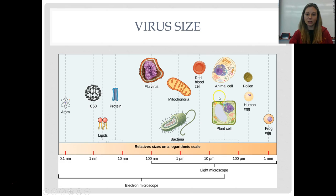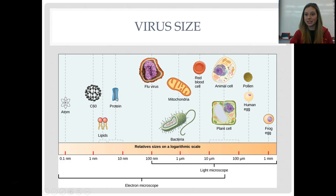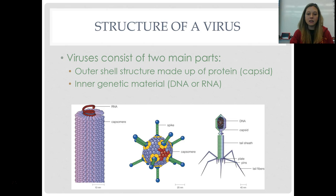Put all those organelles together and you get the size of animal and plant cells — much bigger, but still invisible to the naked eye. Here's a single grain of pollen at about 100 micrometers, and a flu virus is about 100 nanometers. So in order from smallest to largest: virus, then prokaryotic cell, then eukaryotic cell.